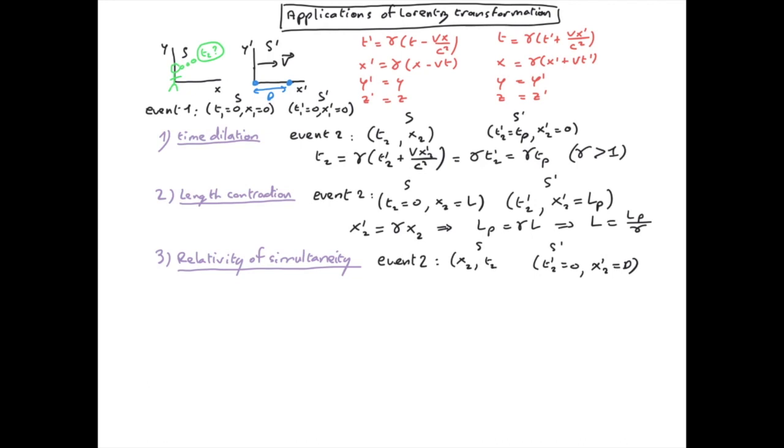We get T₂ by applying the inverse Lorentz transformation with T₂′ = 0 and X₂′ = D. This gives the relativity of simultaneity result: T₂ = γVD/c².